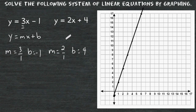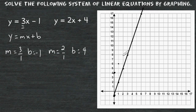Now let's graph our second equation. Let's start by locating the y-intercept, which is positive 4. From that point, we are going to rise up 2 and make a run of 1, repeating that pattern — up 2 over 1 — to plot a series of points. Now we take those points and connect them together.